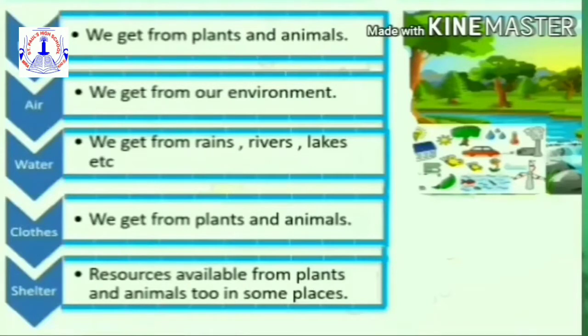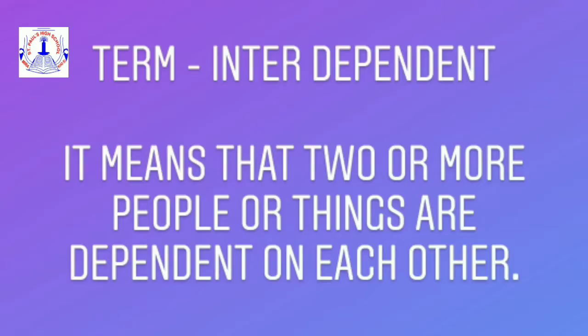In the environment, plants, animals, and human beings are all interdependent on each other. Now students, what is interdependent? Interdependent means that two or more people or things are dependent on each other.